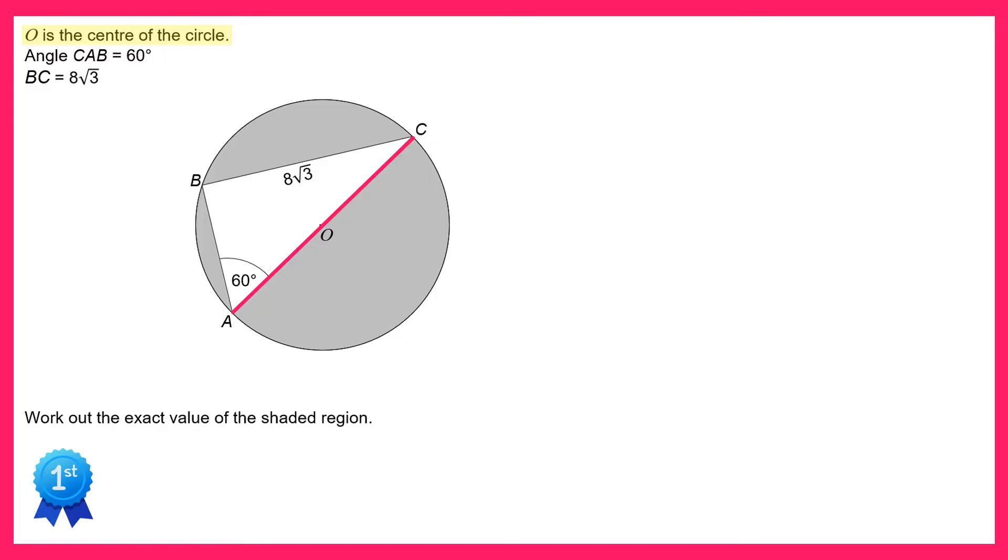If we have a diameter we have a semicircle, in which case the angle here at B is a right angle, using our circle theorems. So we can draw a nice right angle triangle where the length BC is 8√3 and the angle BAC is 60 degrees.